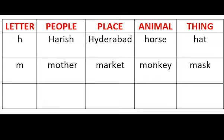The second letter is M. Under people, it is mother; place: market; animal: monkey; thing: mask. Did you enjoy the game, children?